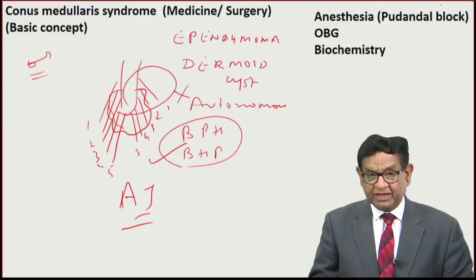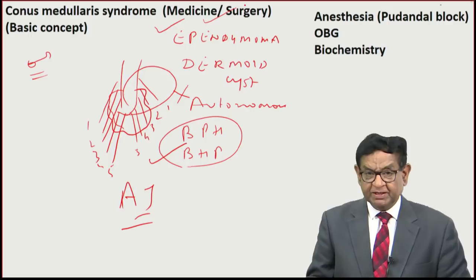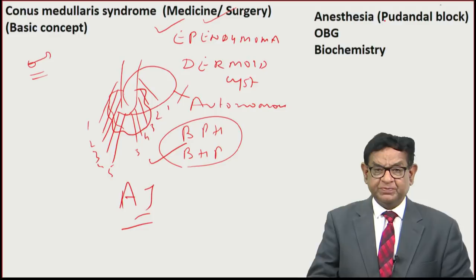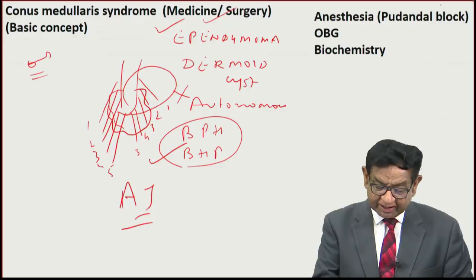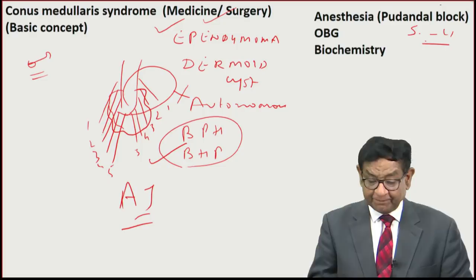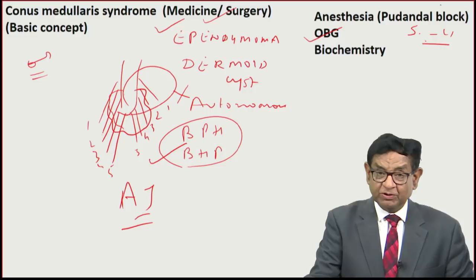For the anesthesia aspect: in pudendal block, we block S2, S3, S4, which supplies the perineal area. This is why in OBG, pudendal block is preferred for so many conditions — because it supplies the perineal area, which is the area of concern for obstetricians and gynecologists.